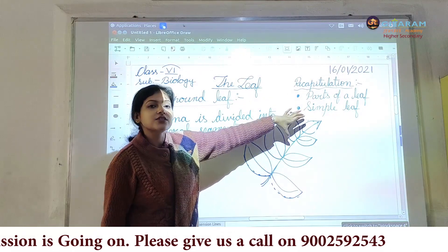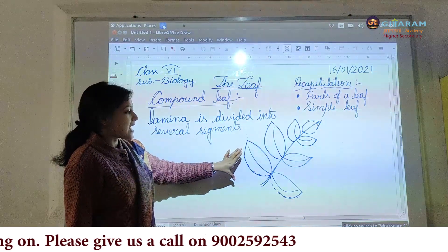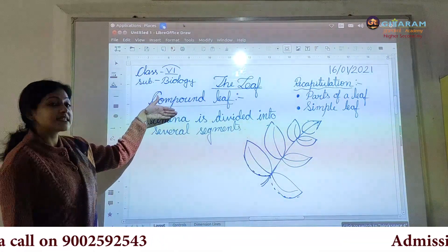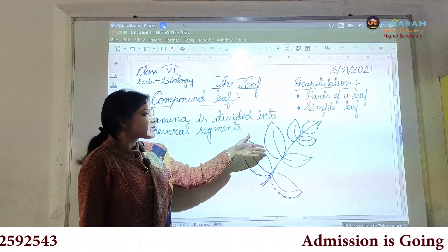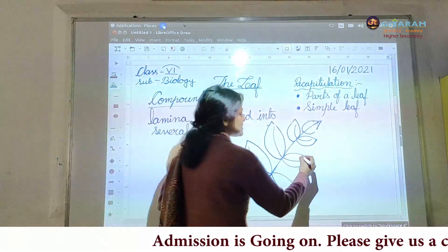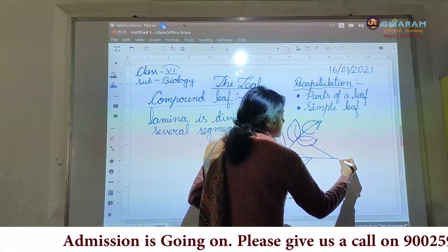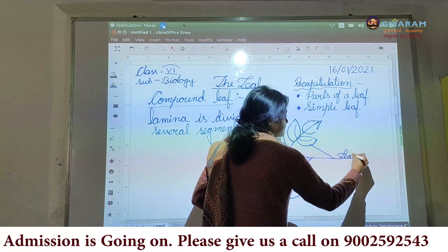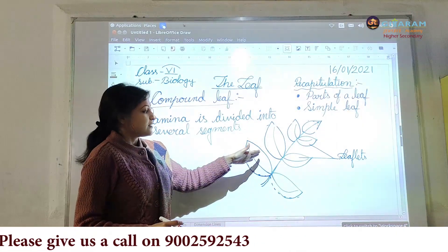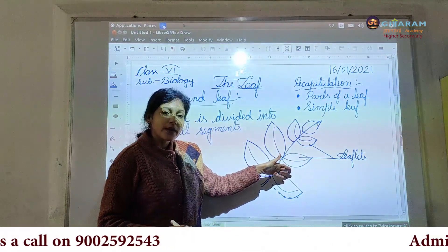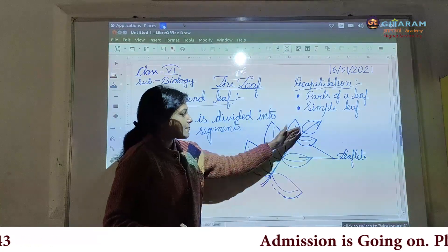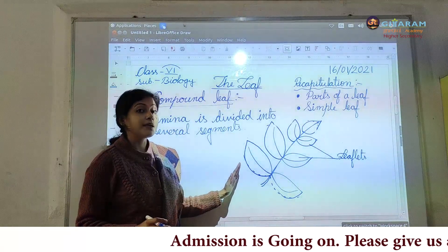As a result some leaf-like structures are formed over here, but these are not leaves. The whole structure is called a compound leaf. But what are the names of these leaf-like structures? They are called leaflets. So the whole structure is a compound leaf and the leaf-like structures present in it are called leaflets.